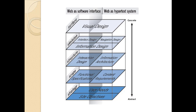Here is an example of a web page mapping the layers: in the surface, design is included; in the skeleton, interface design, navigation design, and information design are included; in the structure, interaction design and information architecture are included; in the scope, functional specifications and content requirements are included; and in the strategy, user needs and site objectives are included. Thanks for watching, please subscribe to my channel for more videos.